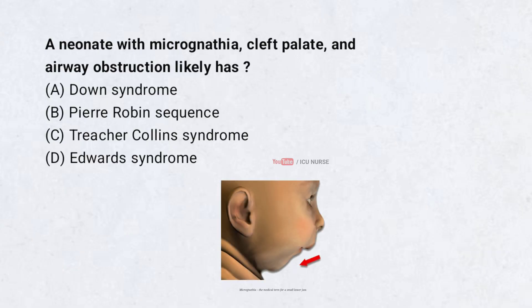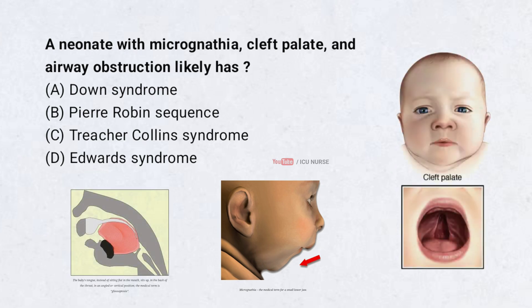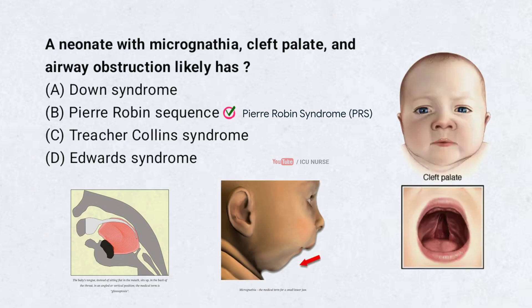A neonate with micrognathia, cleft palate, and airway obstruction likely has: A. Down syndrome. B. Pierre-Robin sequence. C. Treacher-Collins syndrome. D. Edwards syndrome. Correct answer: B. Pierre-Robin sequence. Pierre-Robin sequence, also known as Pierre-Robin syndrome (PRS), is a rare congenital birth defect characterized by an underdeveloped lower jaw (micrognathia), a backward-displaced tongue (glossoptosis), and often a cleft palate. These features can cause breathing and feeding difficulties in newborns.